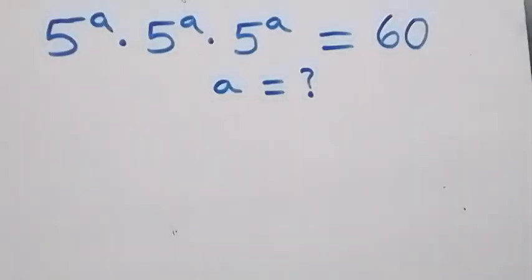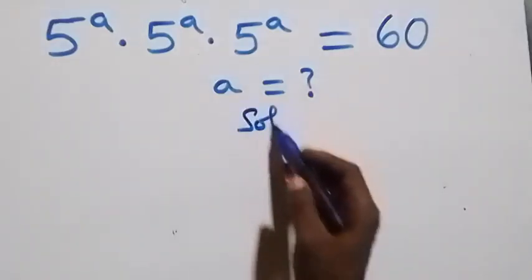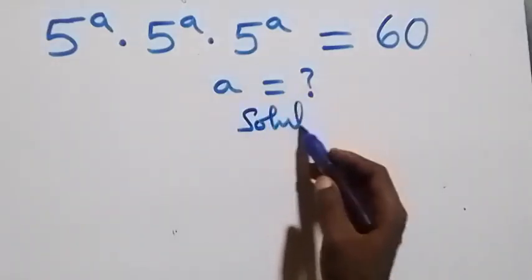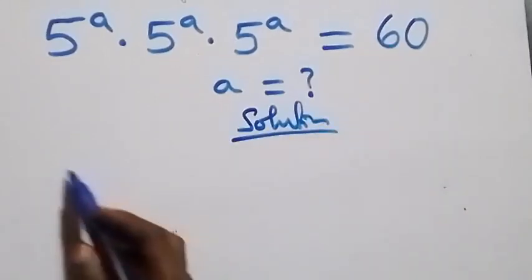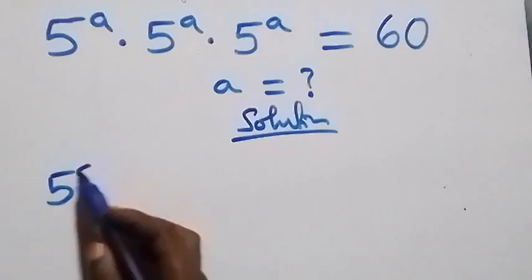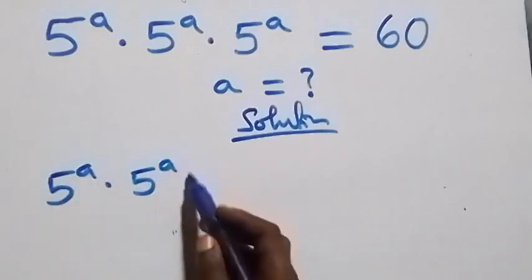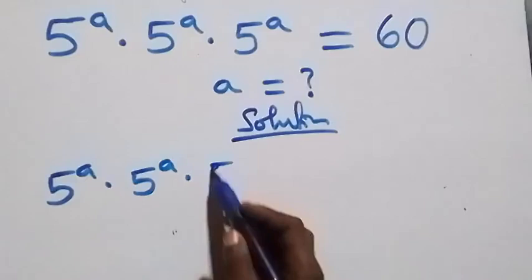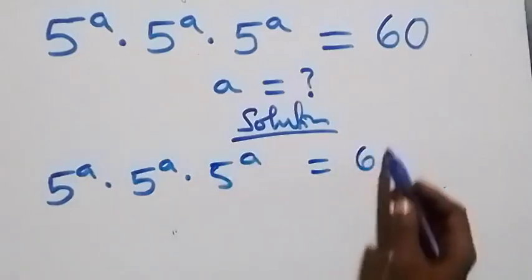Hello, you're welcome. How to solve this nice exponential equation. The equation we have here is 5 raised to power a, times 5 raised to power a, times 5 raised to power a, equals 60.